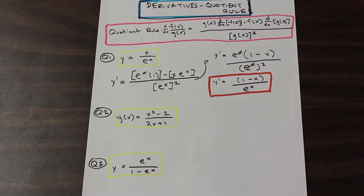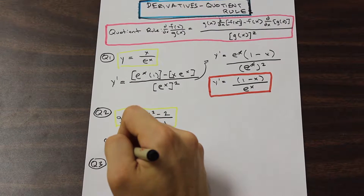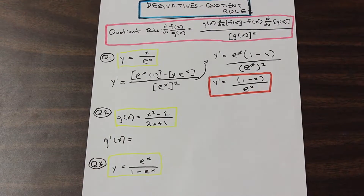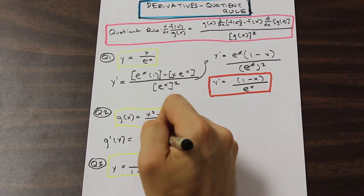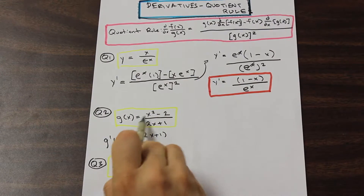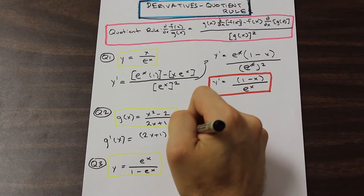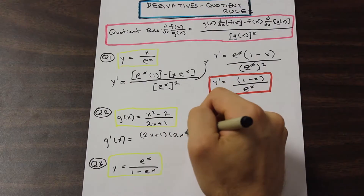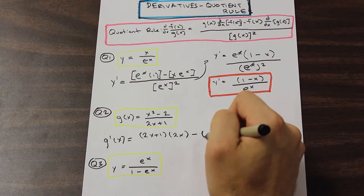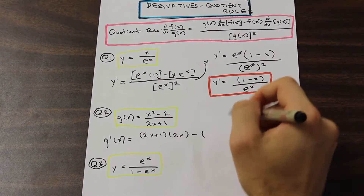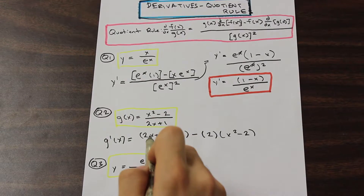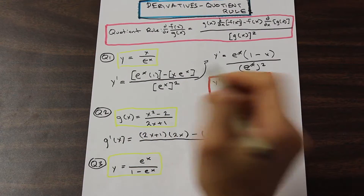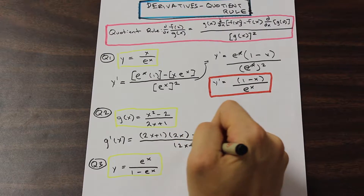Let's go to question two — something a little trickier, but we're going to apply the quotient rule exactly the same. Not forgetting our notation, we have g prime of x is equal to the bottom function, 2x plus 1, times the derivative of the top. We have x squared, so the derivative of x squared is 2x. The derivative of negative 2 is just 0. And we're going to subtract the derivative of the bottom, which is 2, times the top function x squared minus 2. And that is all divided by (2x plus 1) squared.